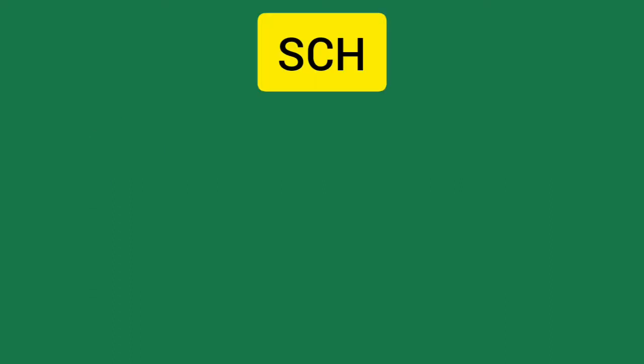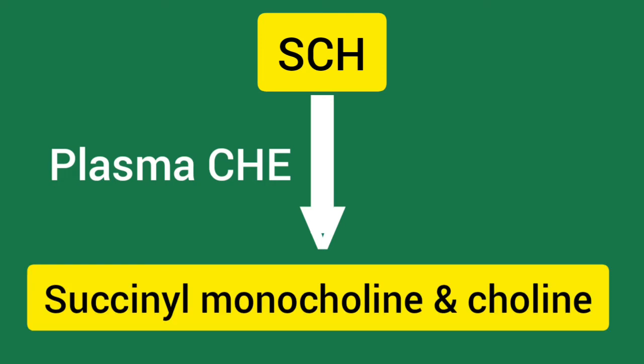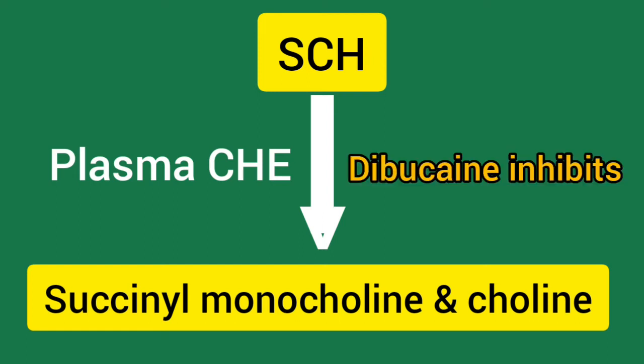Succinylcholine, which is a depolarizing neuromuscular blocking agent, is metabolized in the plasma by plasma cholinesterase enzyme. The Dibucaine number — that is, the percent of pseudocholinesterase enzyme activity inhibited by dibucaine — can be determined by measuring the percentage of succinylcholine that remains unchanged in the blood after a standard dose of dibucaine inhibition challenge is given.